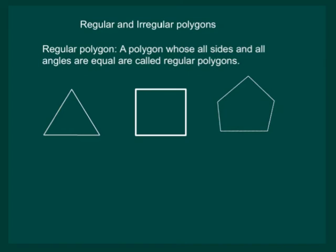In an equilateral triangle, all the sides are equal and all the angles are equal.